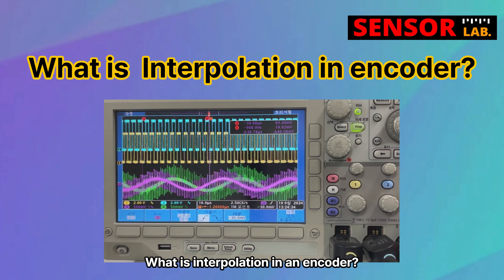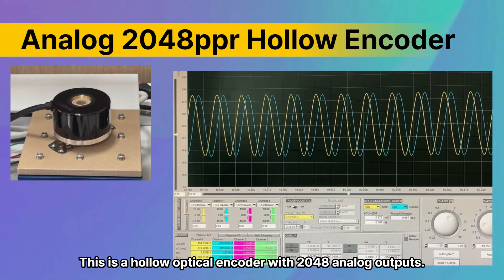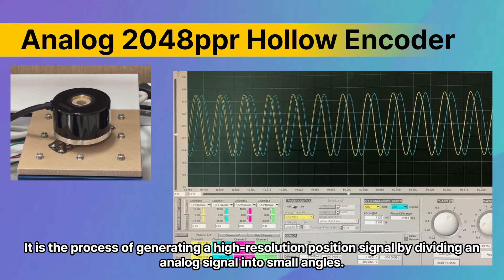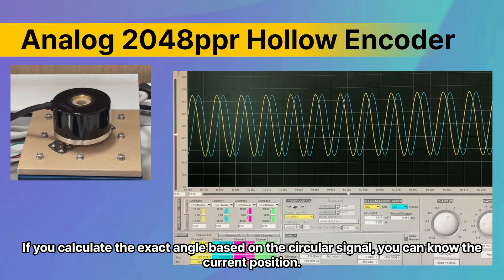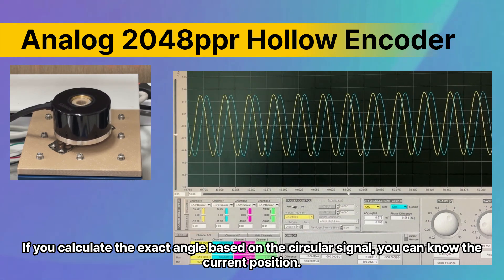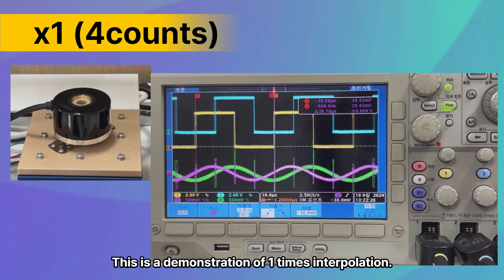What is interpolation in an encoder? This is a hollow optical encoder with 2048 analog outputs. It is the process of generating a high-resolution position signal by dividing an analog signal into small angles. If you calculate the exact angle based on the circular signal, you can know the current position. This is a demonstration of one-times interpolation.